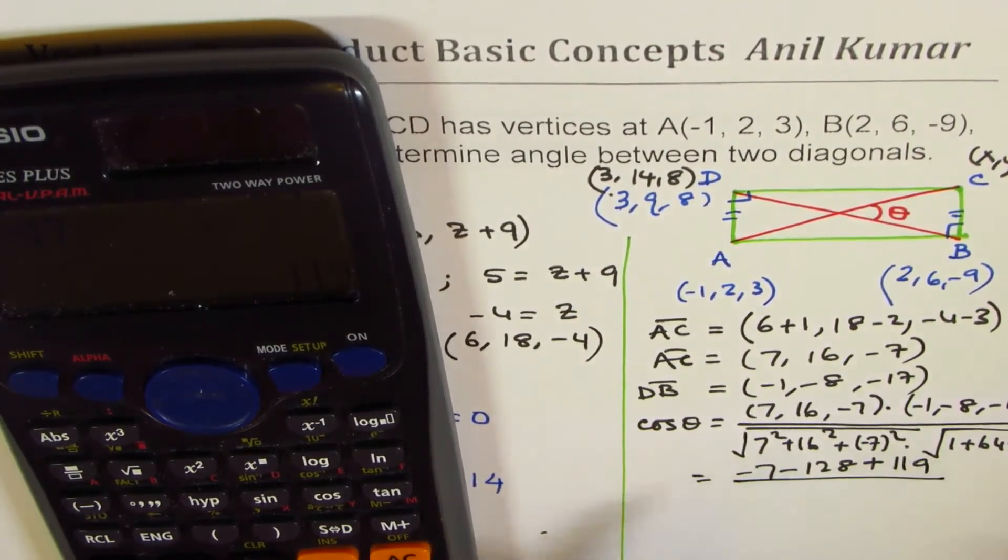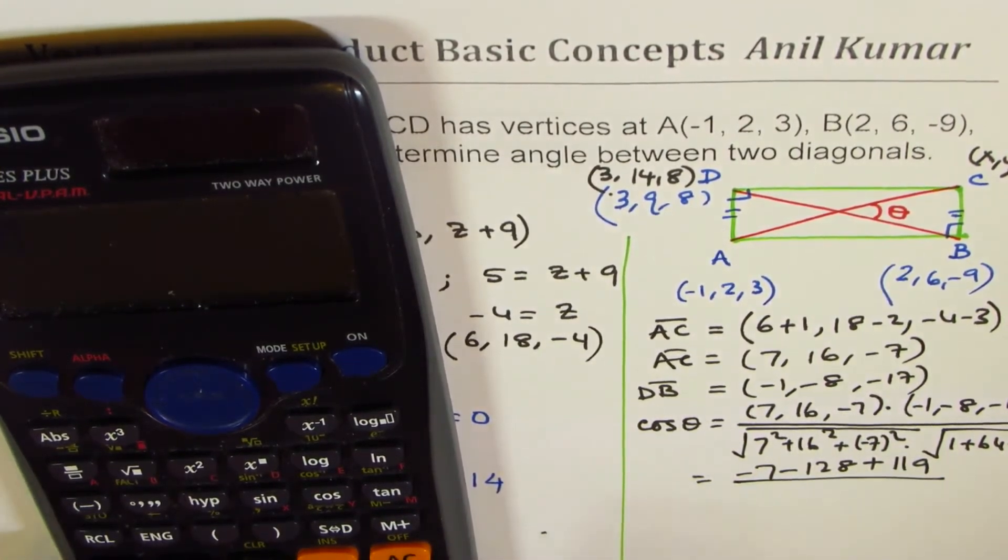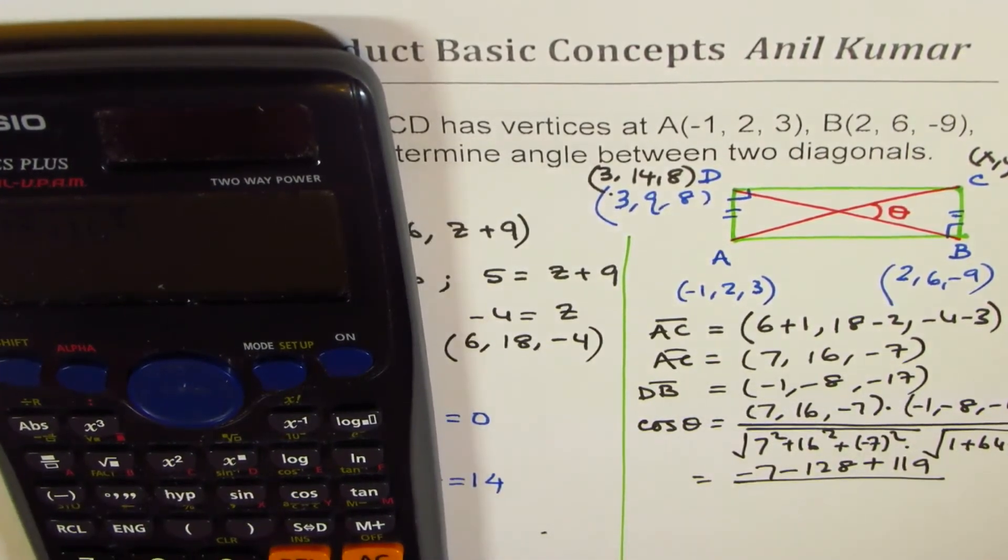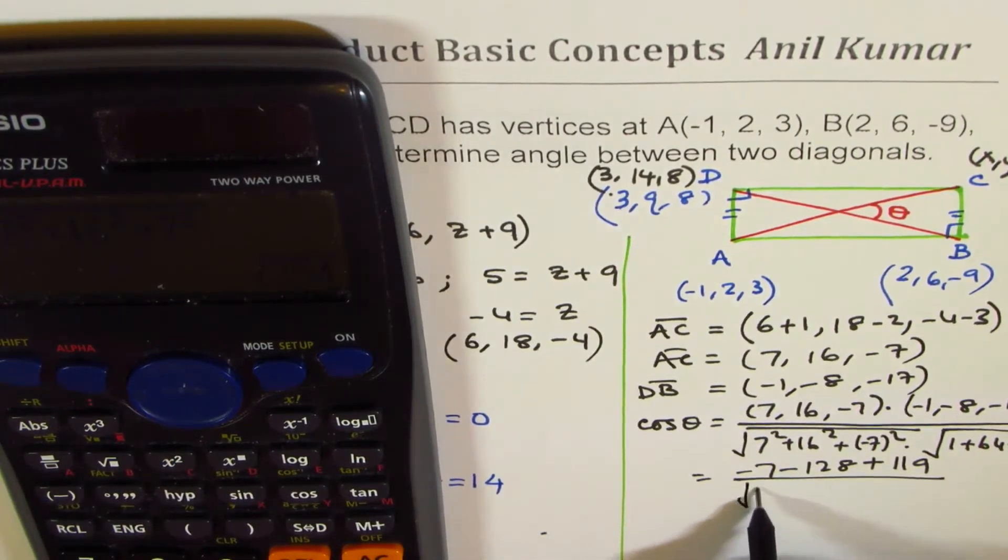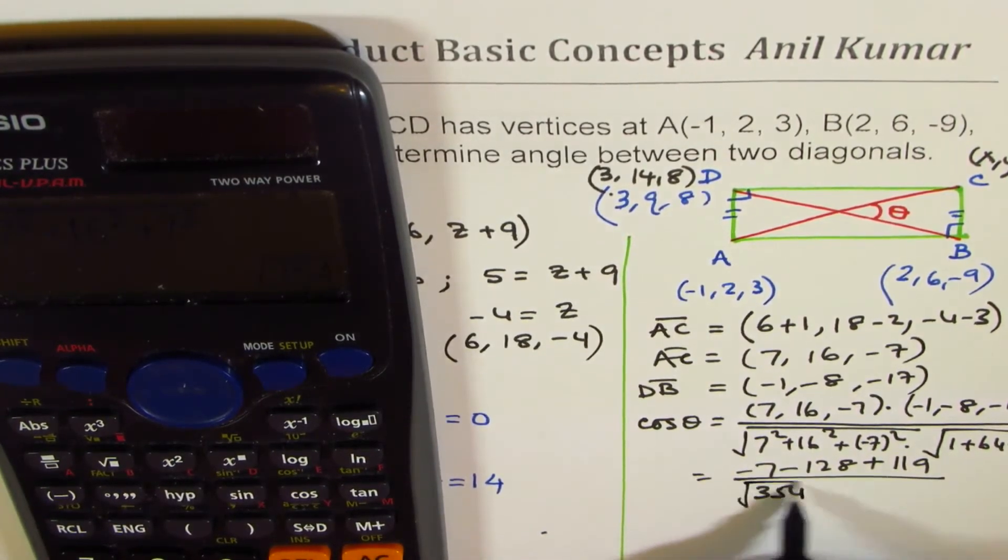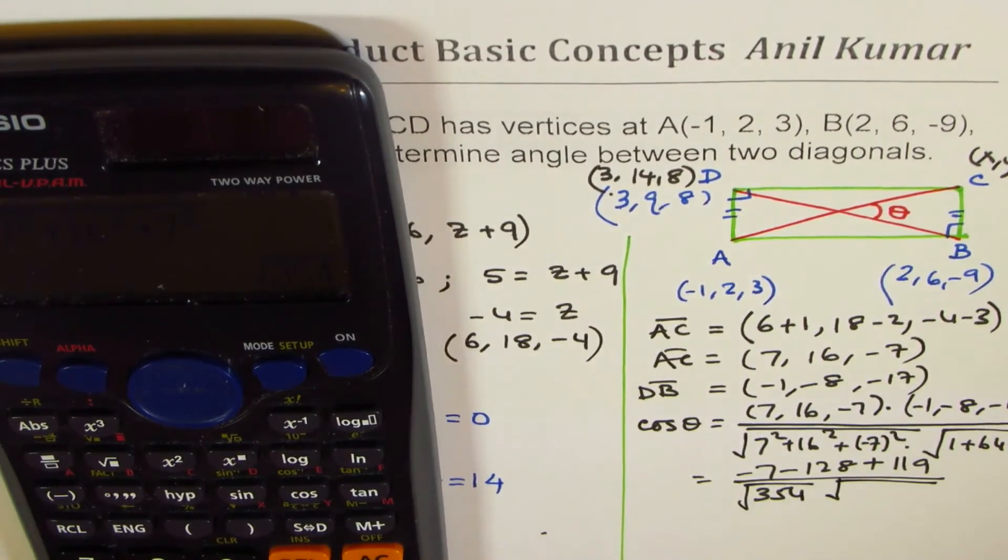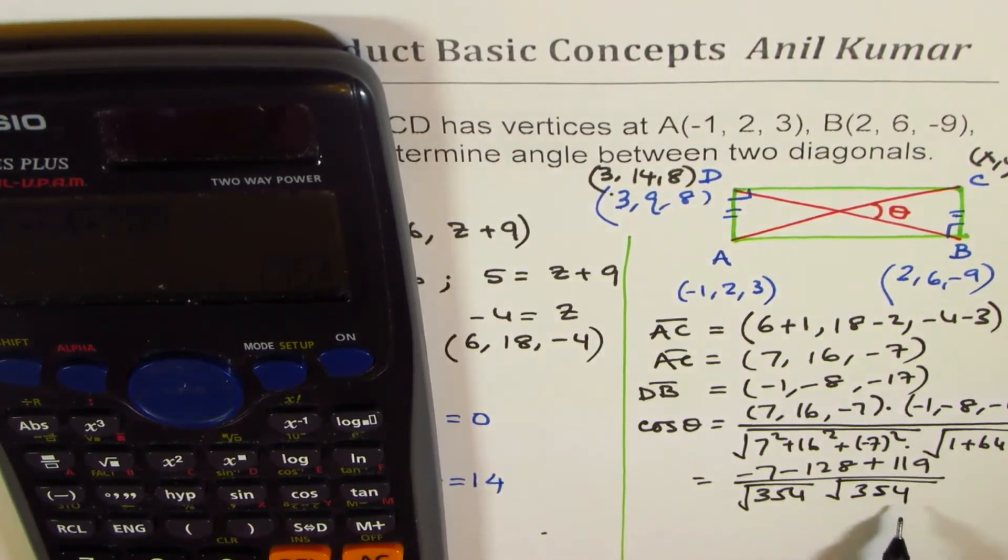divided by √(49+256+49) times √(1+64+289) equals √354 × √354 = 354.